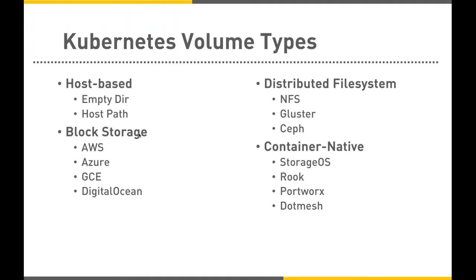You also have volumes that come from block storage. For example, when launching on DigitalOcean, you can map a block storage volume straight into the pod. These are independent of both the pods and the VMs hosting the workload — even after you terminate the node and pod, the data is retained. Amazon's EBS, Azure's Disk, and GCE's Persistent Disk are examples of very durable, persistent block storage options.